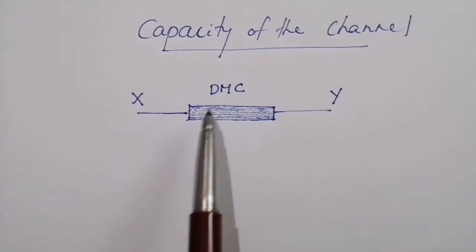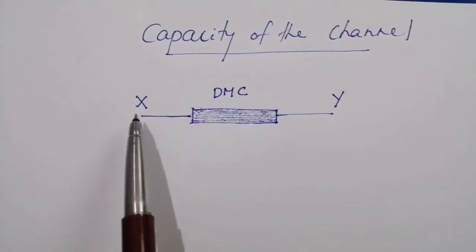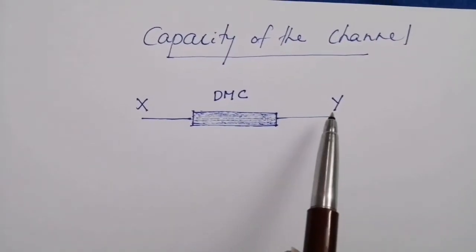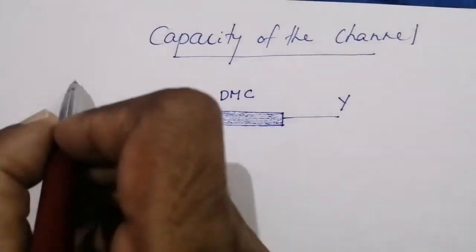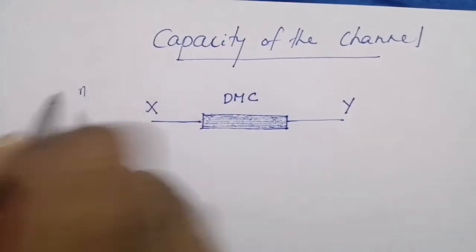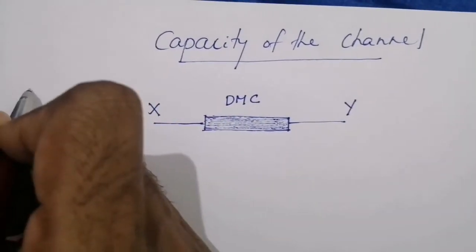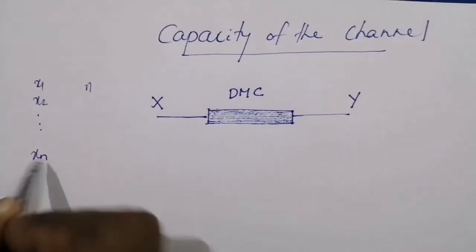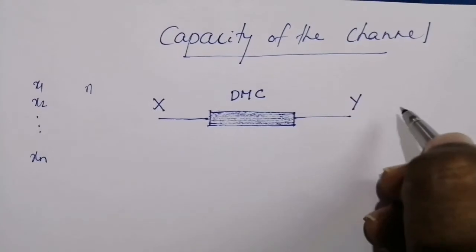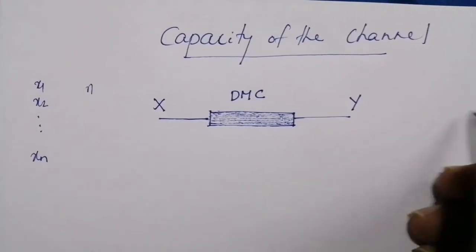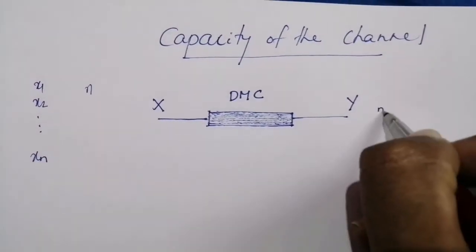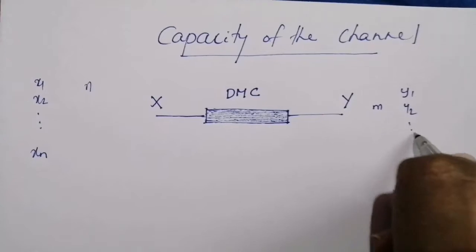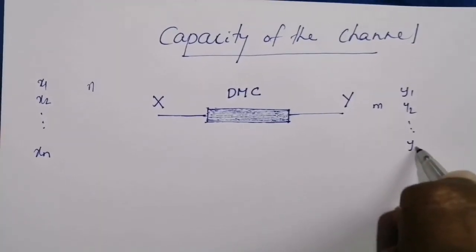Consider a discrete memoryless channel with input symbol x and output symbol y. Assume that there are n input symbols designated as x1, x2, etc., xn, and m output symbols designated as y1, y2, etc., ym.